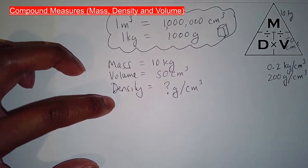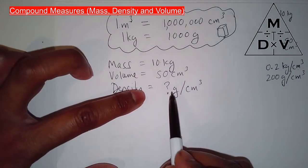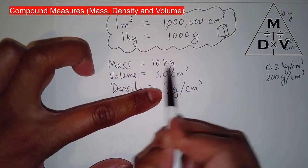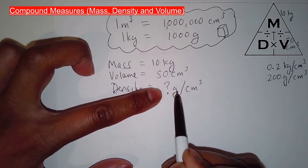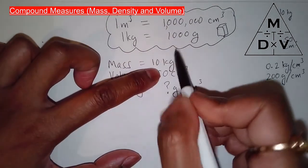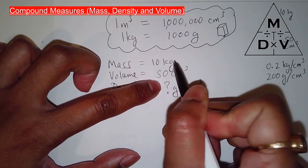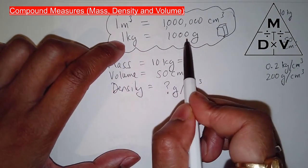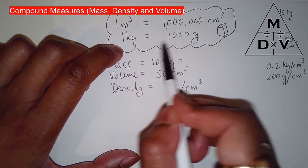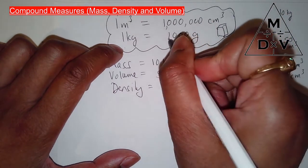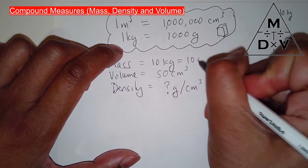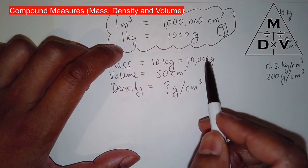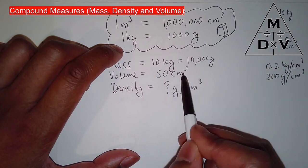Or what I could have done is this. Because they want the answer in grams per centimeter cubed, grams. But the trouble is, I've got kilograms here. And they want the answer in grams per centimeter cubed. So it's a good idea to convert that kilograms into grams. So one kg is 1,000 grams. So 10 kg will be 10 lots of that. Won't be 1,000. It will be 10,000 grams.